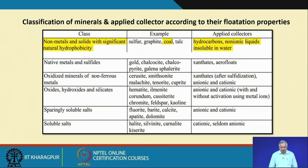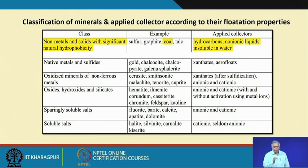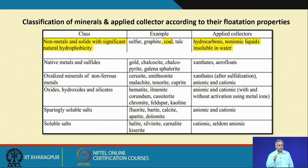This slide shows the classification of minerals and the applied collector according to their flotation properties — that means how quickly the mineral surface responds to the chemicals, which is called the flotation property. For example, coal is a naturally hydrophobic material, meaning it is much easier to float and separate using a froth flotation process.